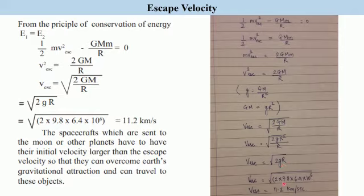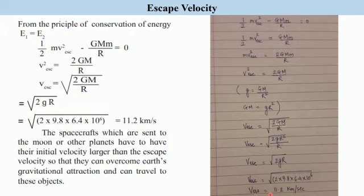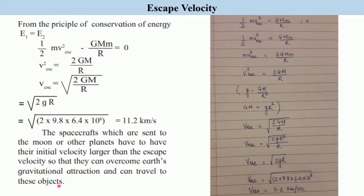Substituting the values: v_escape = √(2 × 9.8 × 6.4 × 10⁶), which gives us the escape velocity from Earth as 11.2 km per second. The spacecrafts sent to the Moon or other planets must have their initial velocity greater than 11.2 km per second in order to overcome Earth's gravitational attraction and travel to other planets or the Moon.